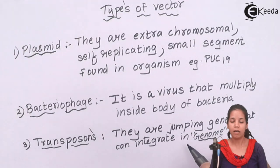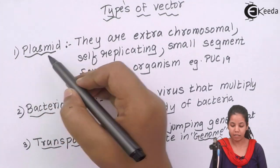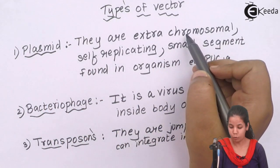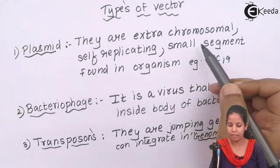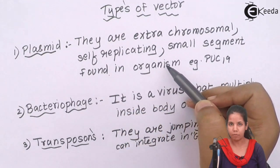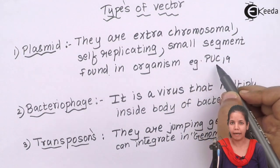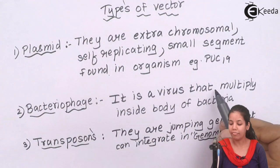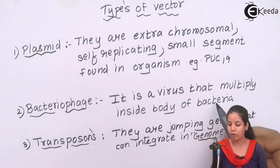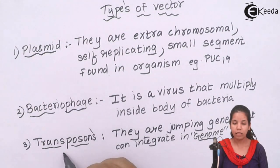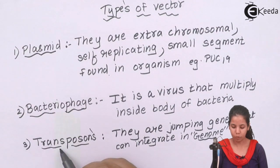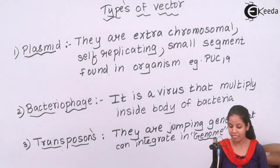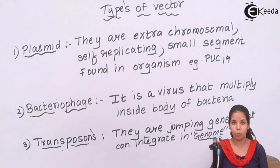Let us see the various types of vectors available. The first is plasmid — they are extra-chromosomal, self-replicating small segments found in organisms such as E. coli. An example is PUC19. The second is bacteriophage — a virus that multiplies inside bacteria. The third and last is transposons, which are jumping genes that can integrate into the genome. Transposons were used in the corn experiment. Thank you.